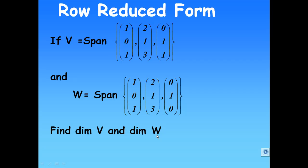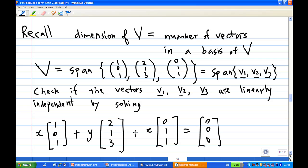To do this, let's recall what is the meaning of dimension. Recall that the dimension of a vector space is the number of vectors in a basis of V. In this case, V is the span of {(1,0,1), (2,1,3), (0,1,1)}. Let's call these three vectors v1, v2, and v3.